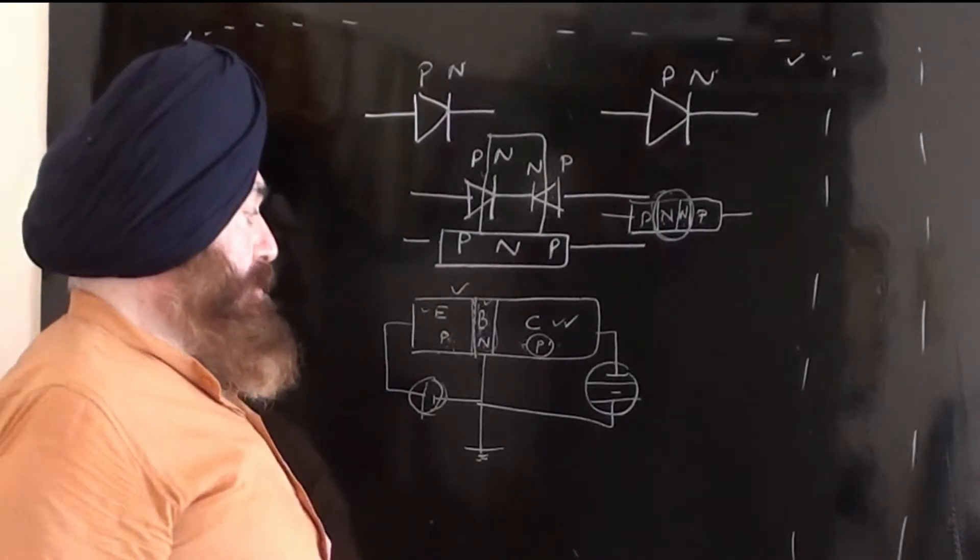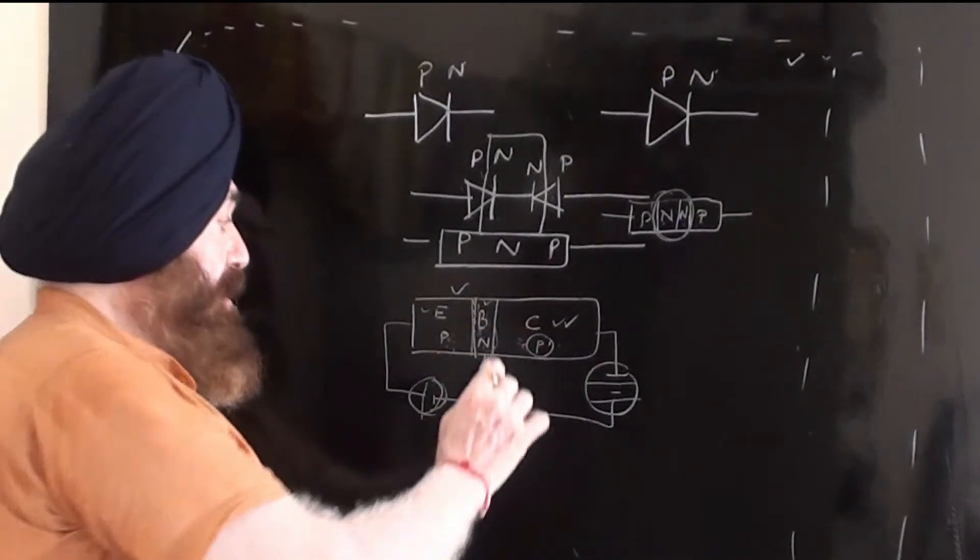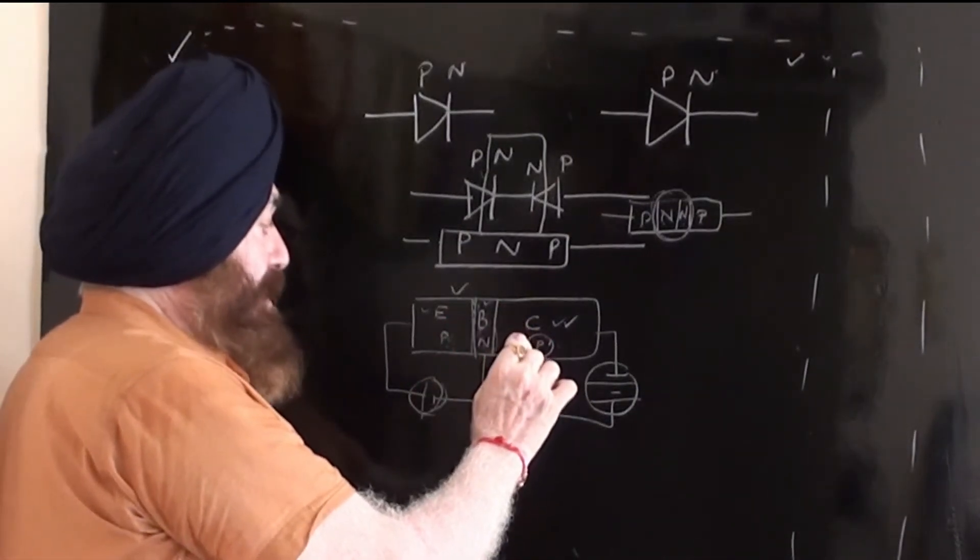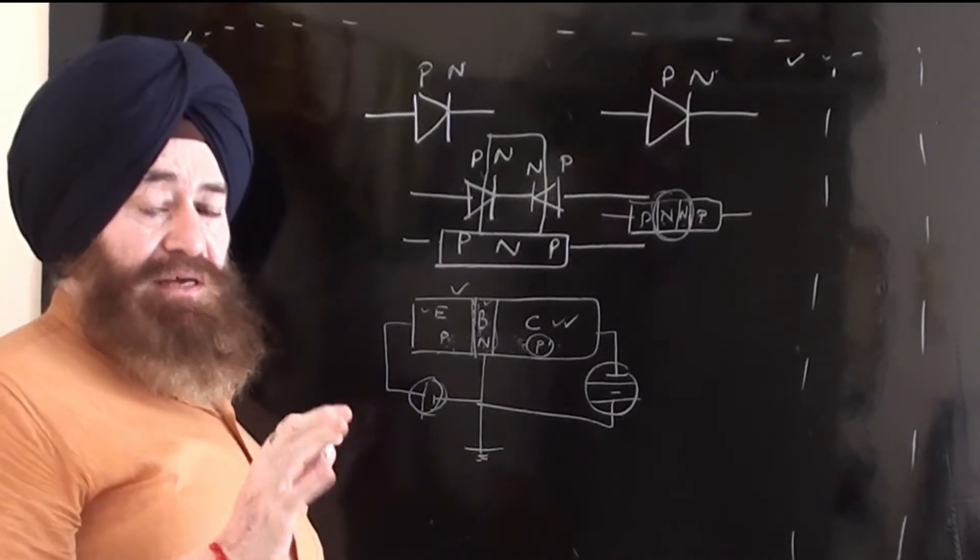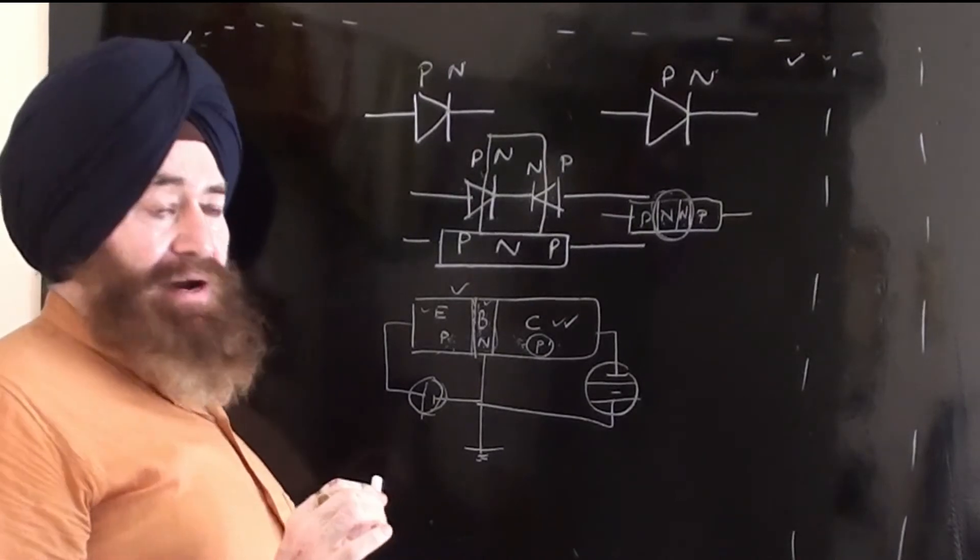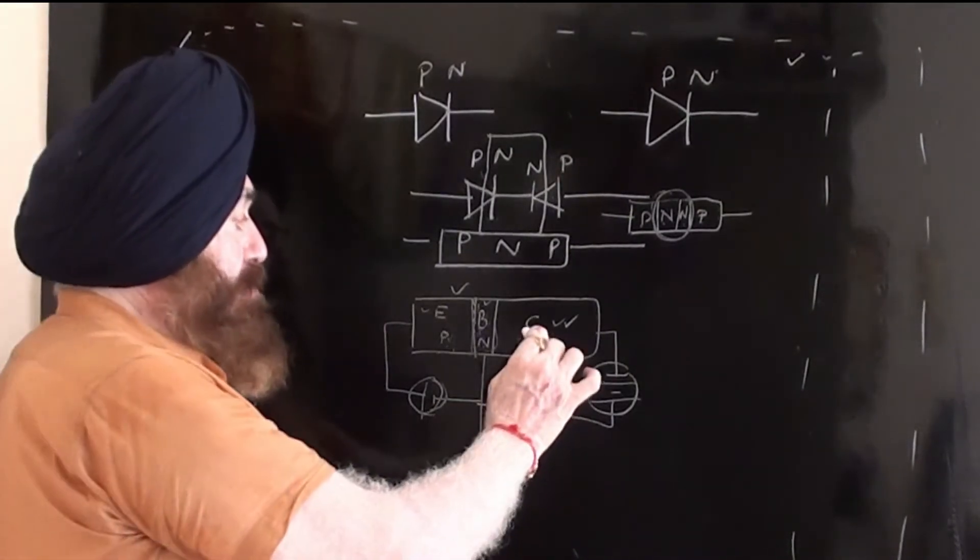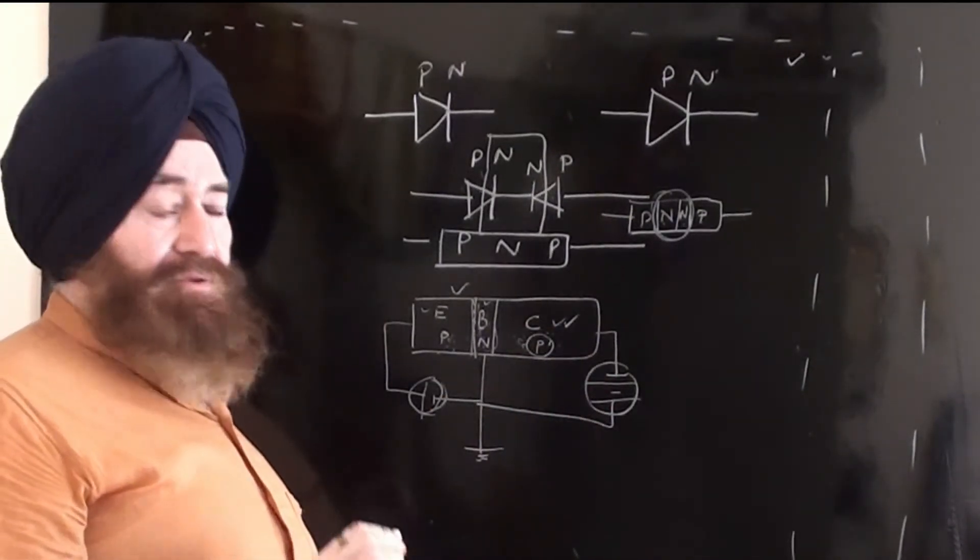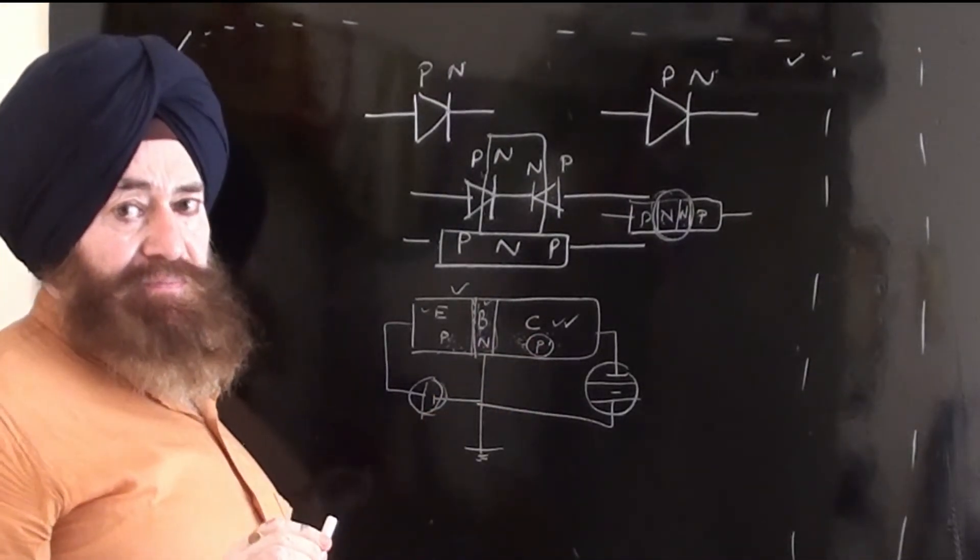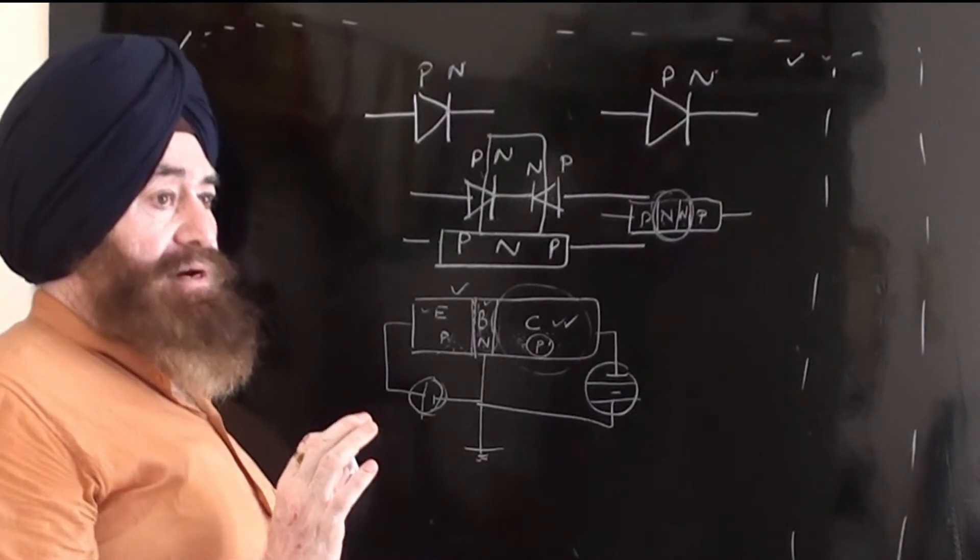The collector is big in size. It is because dissipation of heat here. When the holes reach the collector region, then they may have recombination, combination of holes and electrons. That's why some heat may produce here, and if the heat is produced, it must be dissipated. Otherwise, your transistor may get damaged. So that's why the collector size is always made big.